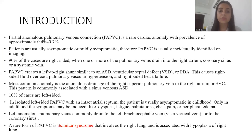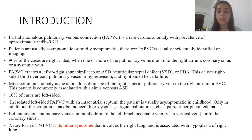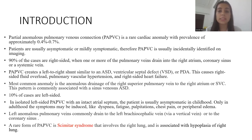Partial Anomalous Pulmonary Venous Connection is a rare cardiac anomaly with prevalence of approximately 0.4 to 0.7%. Patients are usually asymptomatic or mildly symptomatic. Therefore, PAPVC is usually incidentally identified on imaging. 90% of the cases are right-sided. When one or more of the right-sided pulmonary veins drain into the right atrium, coronary sinus, or a systemic vein, PAPVC creates a left-to-right shunt in the heart similar to ASD, VSD, or PDA.